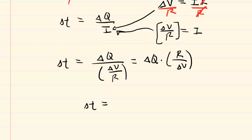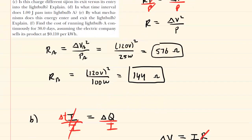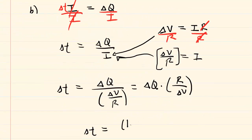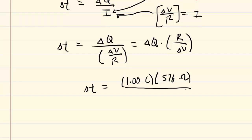Now, the amount of charge was given as one coulomb. The resistance we just determined earlier, it was 576 ohms. And then the potential difference for lightbulb A is 120 volts. So we will punch these quantities into our calculator. And when we do that, we get 4.8. And this is a time interval, so the unit will be in seconds. So that is the correct answer to part B of the question.